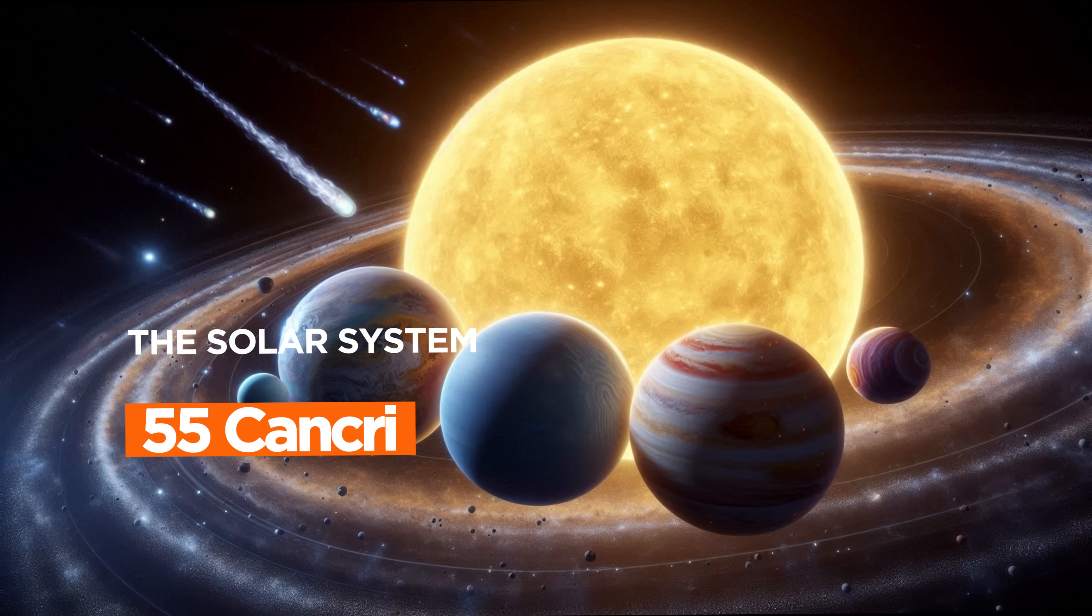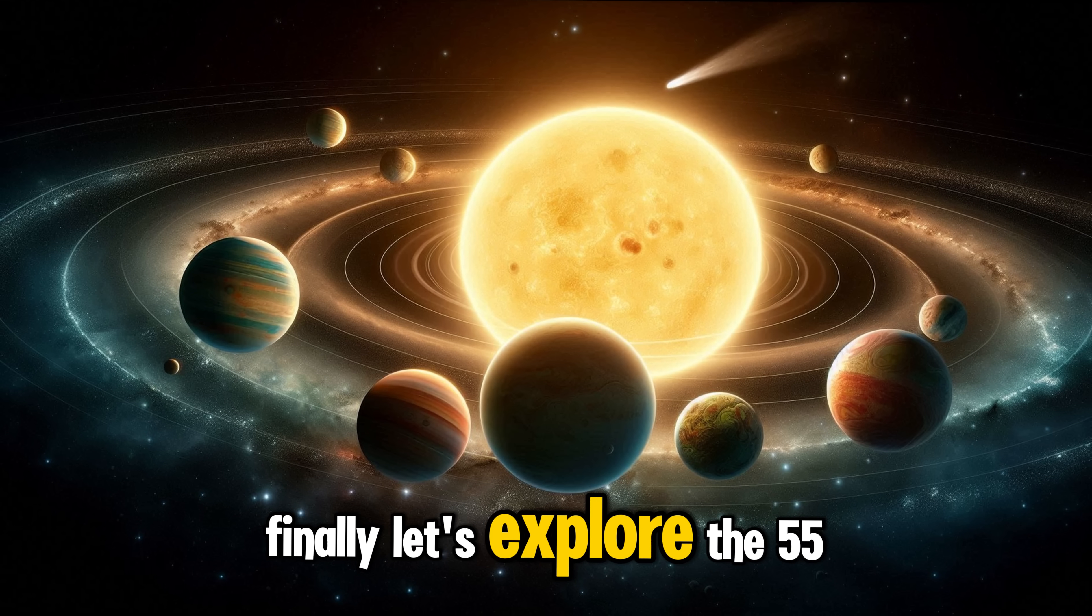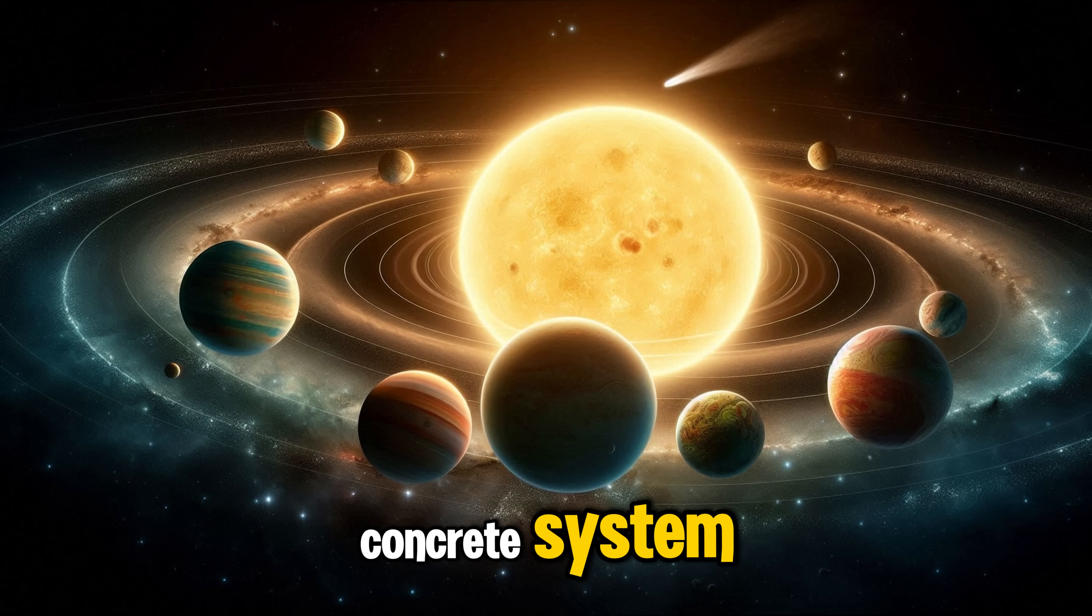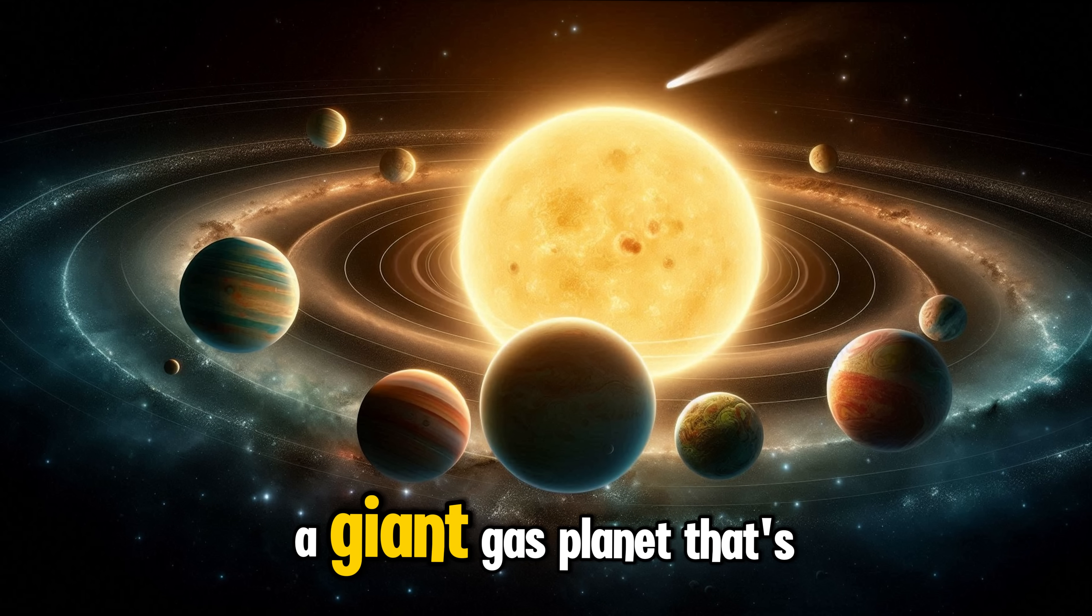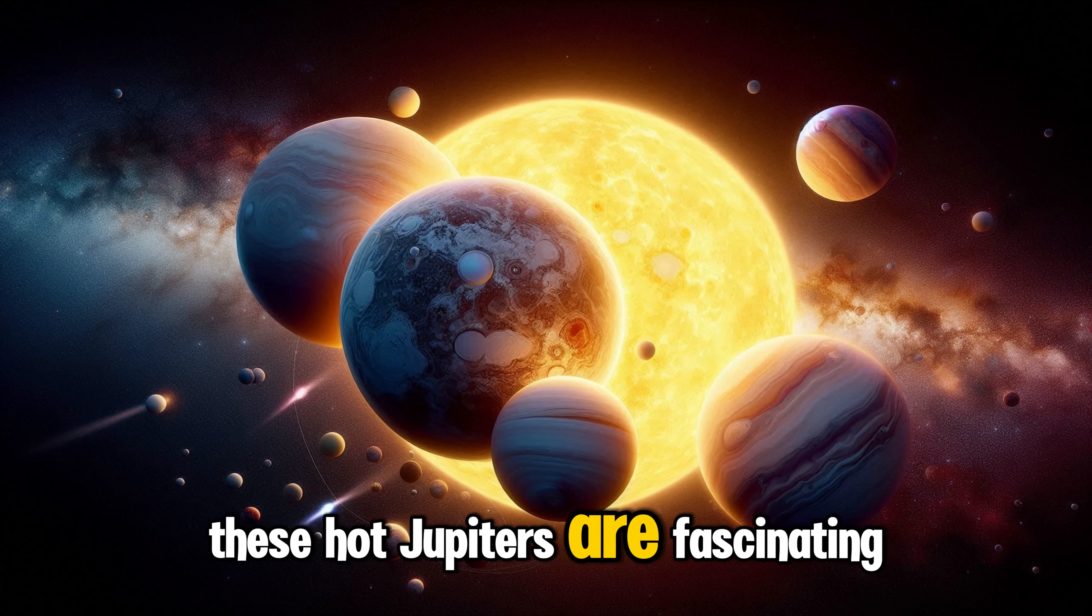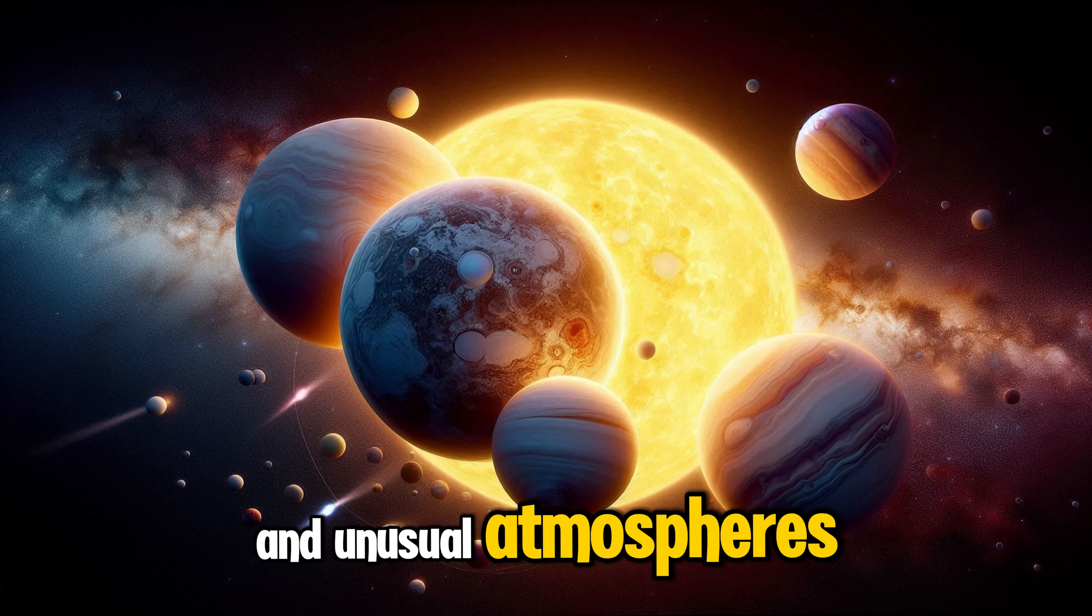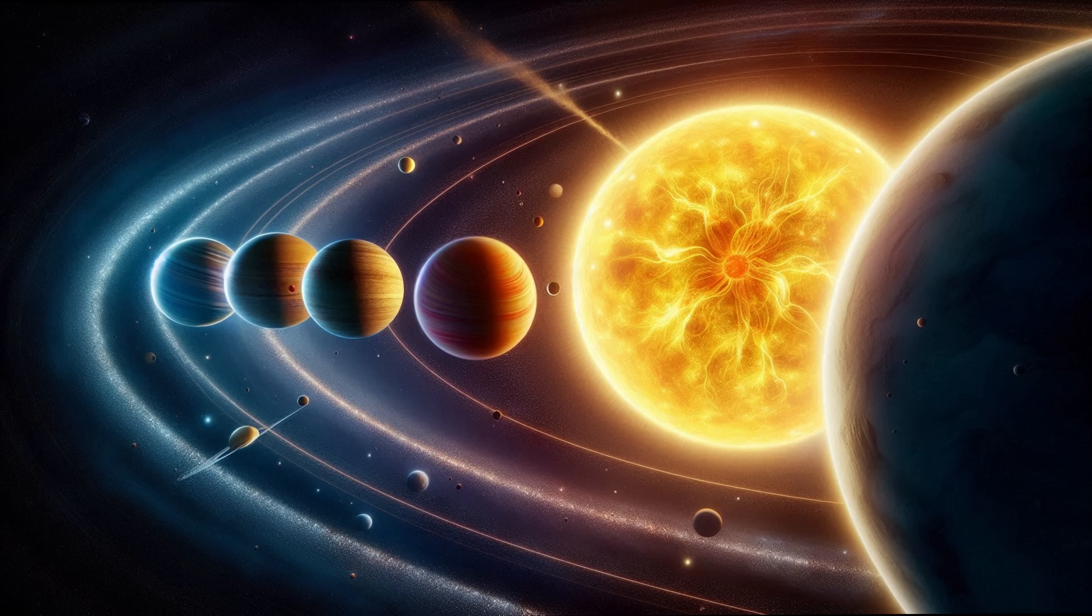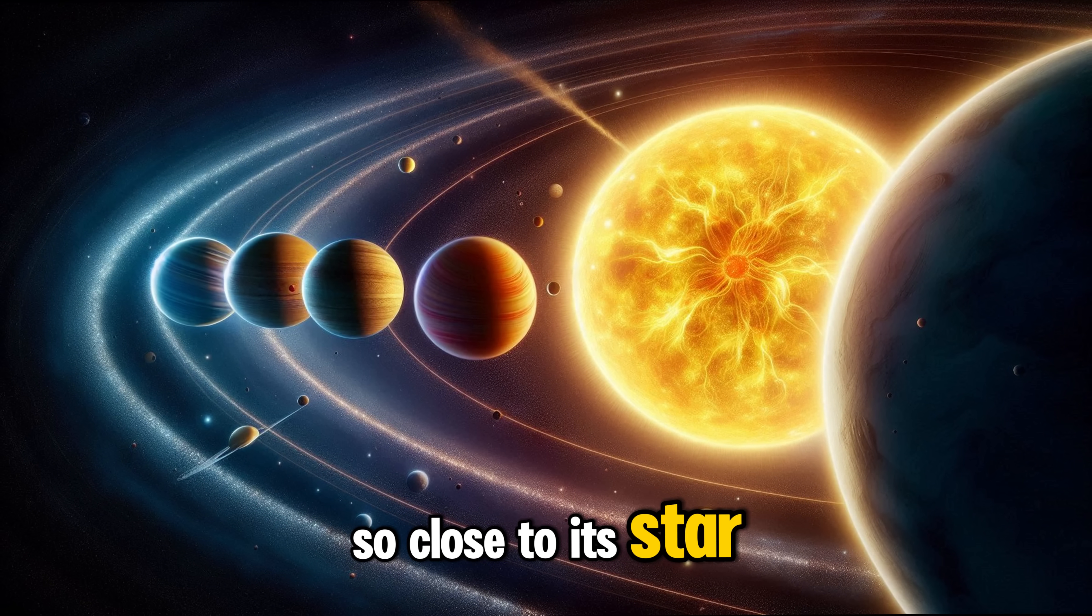The 55 Cancri system. Finally, let's explore the 55 Cancri system, which has five planets. One of them is a hot Jupiter, a giant gas planet that's extremely close to its star. These hot Jupiters are fascinating because they have extreme temperatures and unusual atmospheres. What kind of extreme weather do you think could exist on a planet so close to its star?